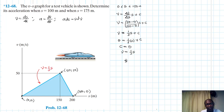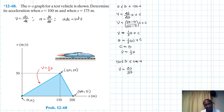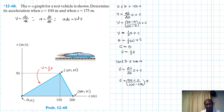For the second interval from 150 to 200 meters, again we have v = (change in v / change in s) × s + c. The slope is (50 − 0) / (150 − 200) times s, plus c.